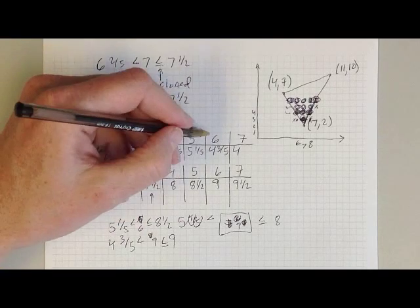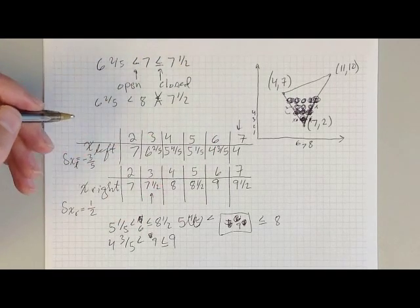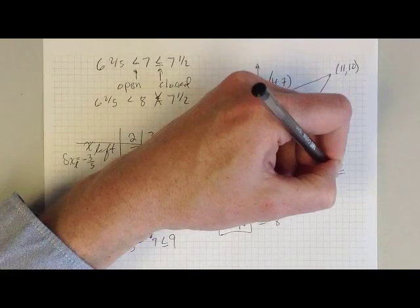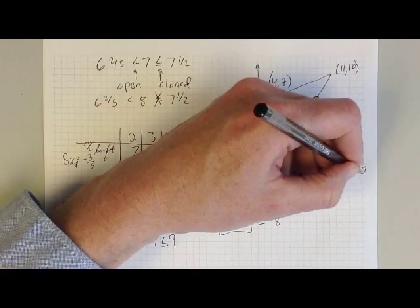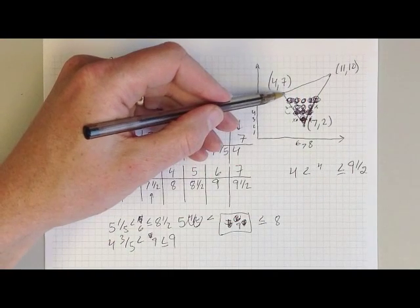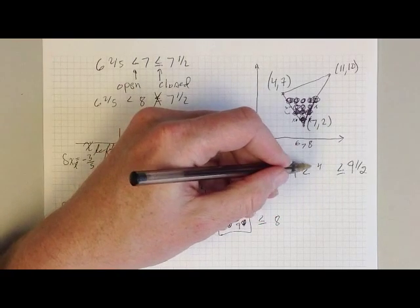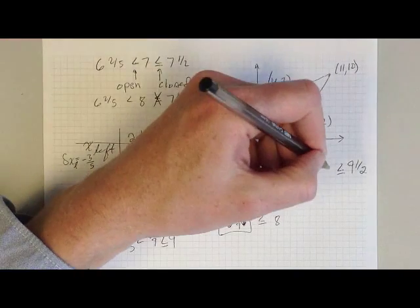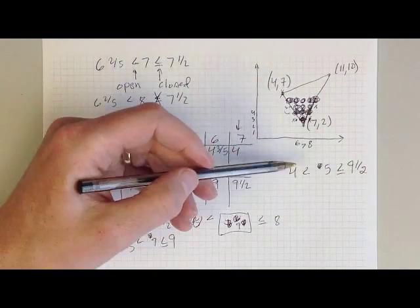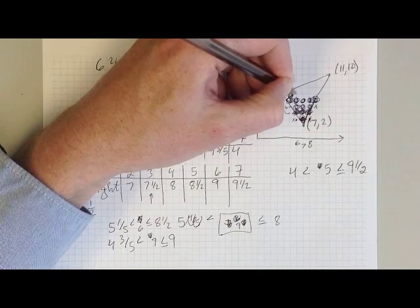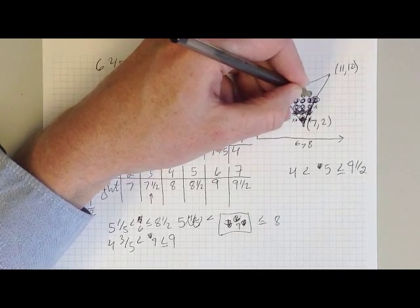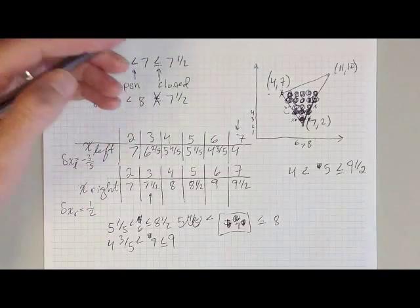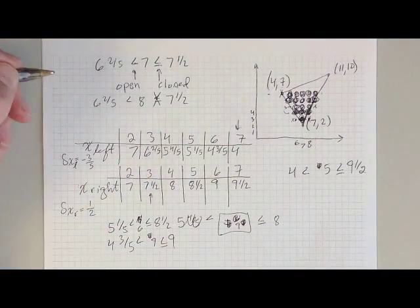Next is scan line 7. I compare 4 on the left — less than — to 9 and a half on the right. Column 4: 4 is not greater than 4, so I leave this pixel alone — my triangle is open on the left. Column 5: 5 is greater than 4 and less than 9 and a half, so I fill in that pixel, and the pixels for columns 6 through 9. At column 10: 10 is not less than or equal to 9 and a half, so I'm done.